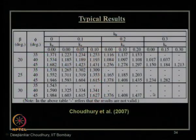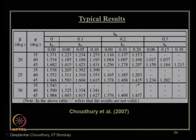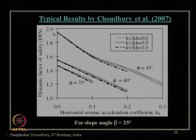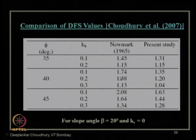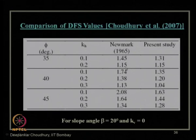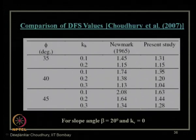The plot of dynamic factor of safety in terms of KH and KV for different values of φ shows that in the present study by Choudhury et al. 2007, compared with Newmark's sliding block method, a further lower critical factor of safety is obtained because both the shear fluidization and stability criteria are considered together.